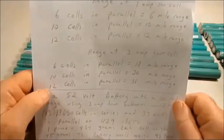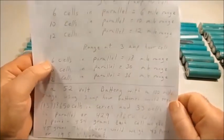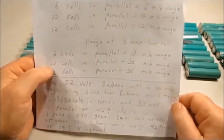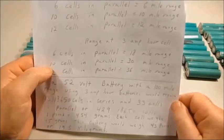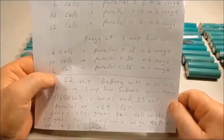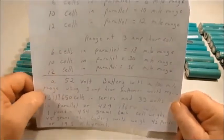Let's just go down to three just to make life easy on this. So if you had six cells in parallel you could get eighteen miles from it, ten cells in parallel you could get thirty miles from it, and twelve cells in parallel you could go thirty six miles. That would be your range figuring the one amp hour per mile.